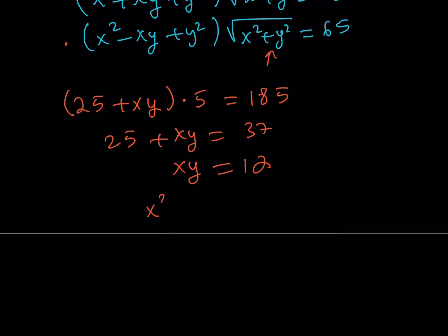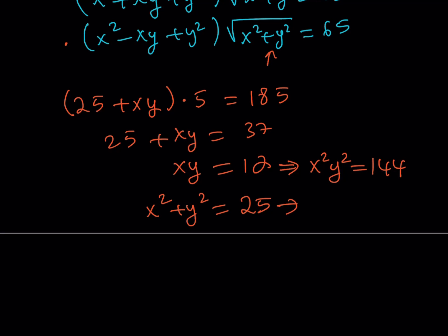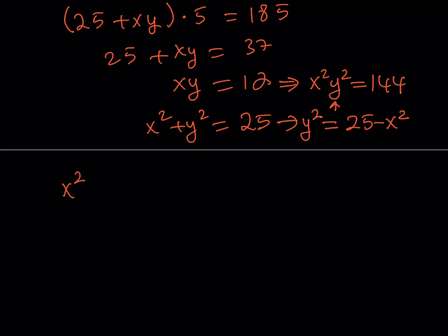So this gives me a simpler system of equations: xy equals 12 and x squared plus y squared equals 25. One approach is to use the formula for x plus y squared, or to square xy equals 12 to get x squared y squared equals 144. From the second equation I can isolate y squared as 25 minus x squared, and substitute that in. So x squared times 25 minus x squared equals 144. This gives a quartic equation, but it's biquadratic — no x cubed or x terms — so I can solve it again using substitution.